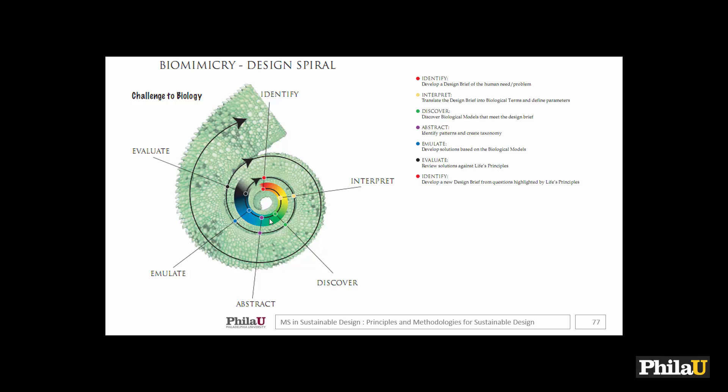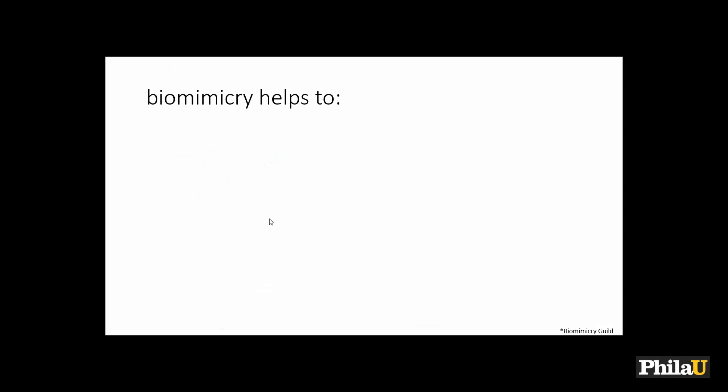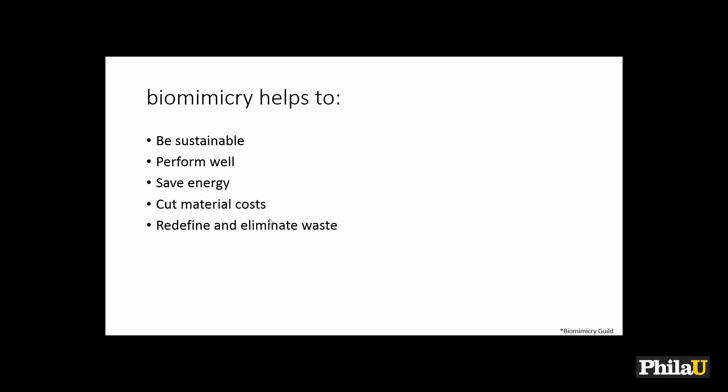You emulate and develop solutions based on the biological models, review solutions against life's principles, and develop a new design brief — it just keeps repeating. I'm going to show examples, but it's important to know this process. We don't use it in studio yet because I'm not completely convinced. Biomimicry is said to help you be sustainable and perform well — I'm questioning that. It's true a geodesic dome is about 15 percent more energy efficient just based on its shape, its volume-to-surface-area ratio. It would save energy and cut material costs since we have a lot of extra material in buildings because of straight lines. There is no waste in nature — waste is food.